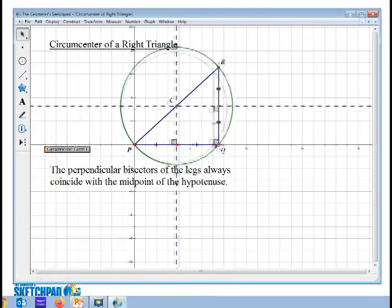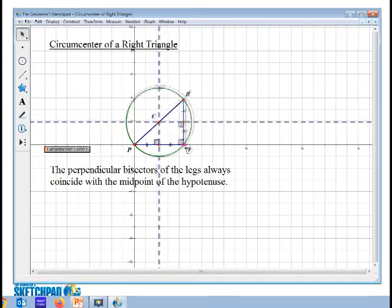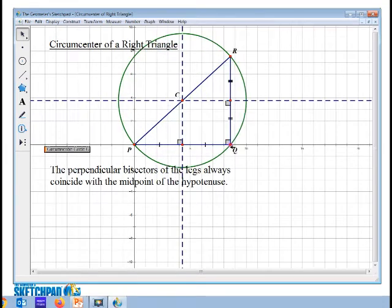If I make Q a little closer to P or farther away from P, change the side, the circumcenter never leaves the hypotenuse, and it's always the center of the circle. So this angle is guaranteed then to be a right angle, and we're going to be talking about why that always is the case.